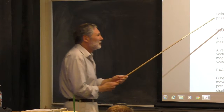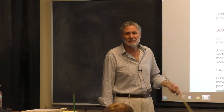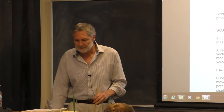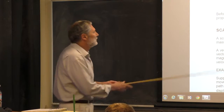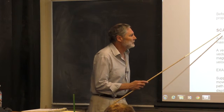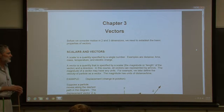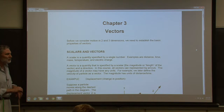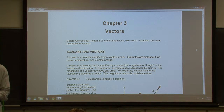You're probably familiar with this, but maybe it's been a while. First, we need to distinguish between scalars and vectors. A scalar is just a quantity specified by a single number, like distance, time, mass, temperature, or electric charge. It just takes one number to specify that.